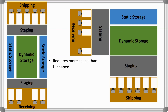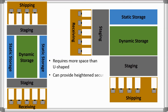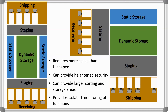For example, warehouses that require heightened security can benefit from the separate in and out areas. I-shaped and L-shaped layouts can also provide larger sorting and storage areas for both shipping and receiving docks, as well as allow for isolated monitoring of each function.